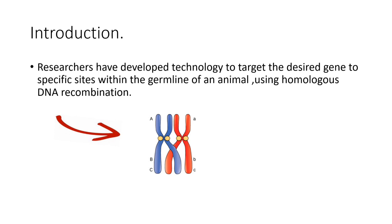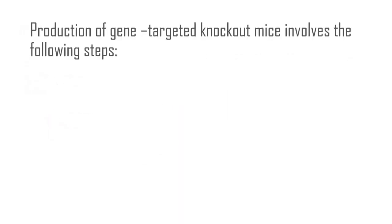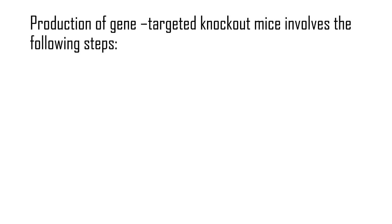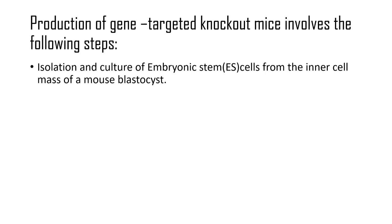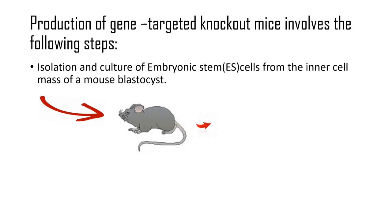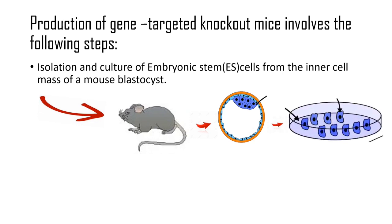Now we will see the production of gene-targeted knockout mice, which involves the following steps. The first step is to isolate and culture the embryonic stem cells from the inner cell mass of a mouse blastocyst. We take a mouse, isolate the blastocyst, extract the embryonic stem cells from the inner cell mass, and culture them.